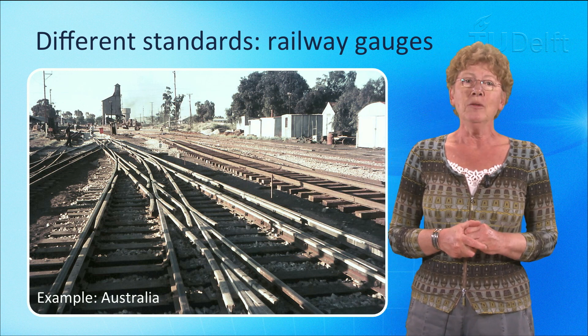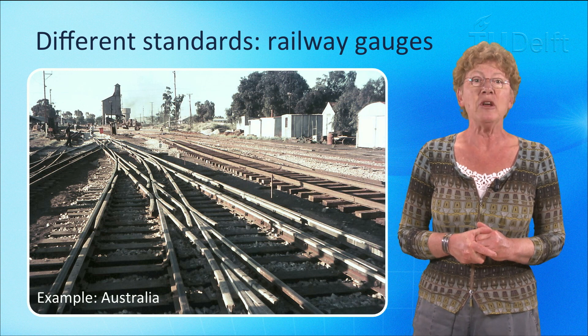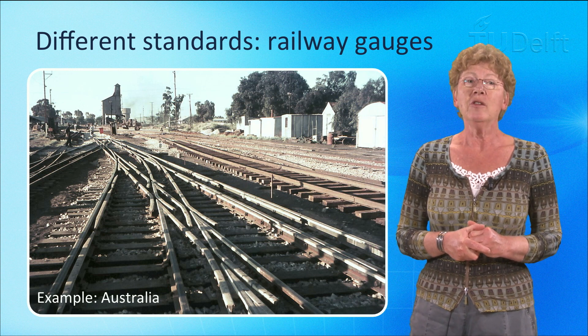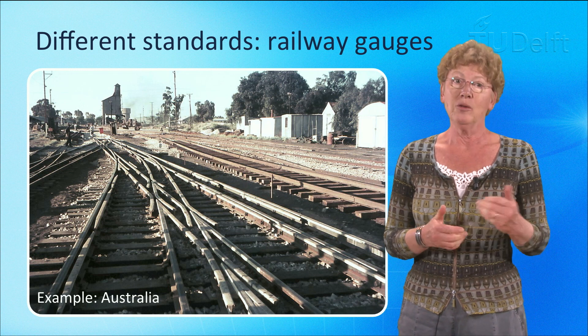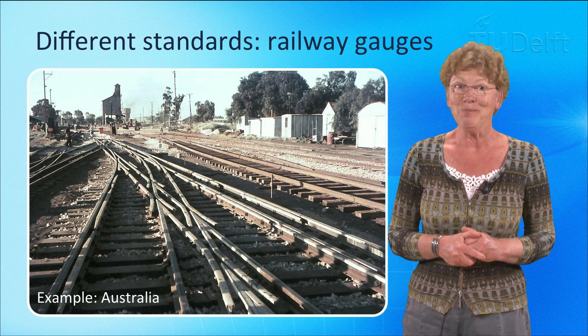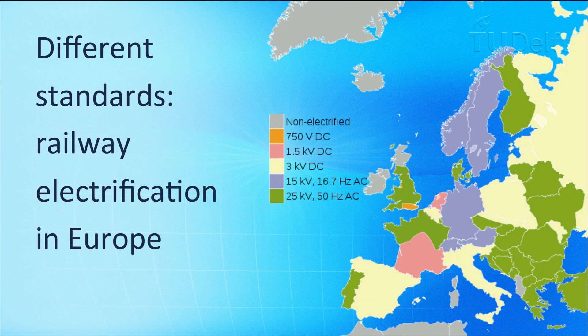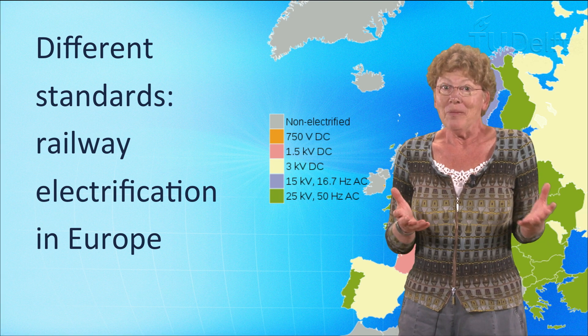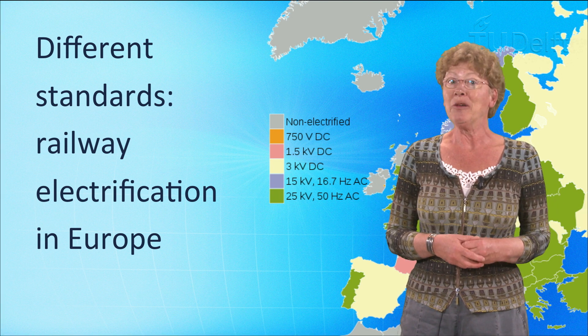Another standardization issue encountered in long-distance and especially international railway networks is concerned with the electrical power supply standards to electrified railway lines. Different countries and regions apply different standards. Some use alternating current, some use direct current, and they very often use different standard voltage levels. This necessitates costly investments in auxiliary equipment on the electric locomotives on international railway lines, so that they can adjust to different electrical standards.